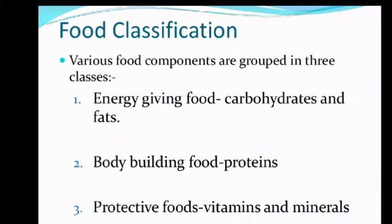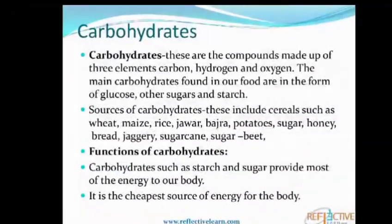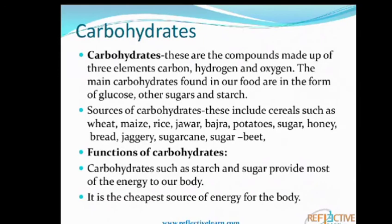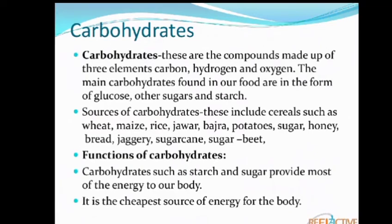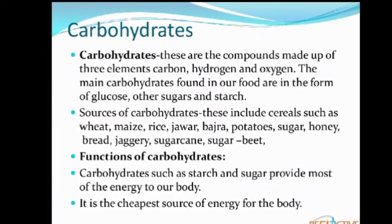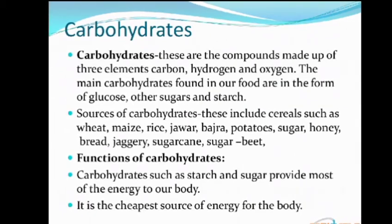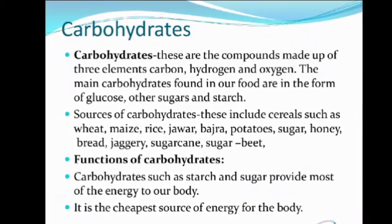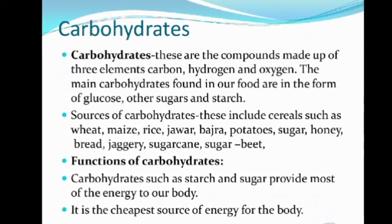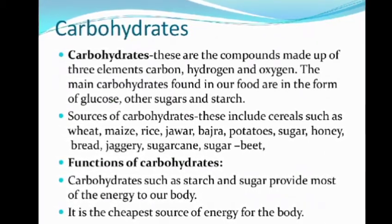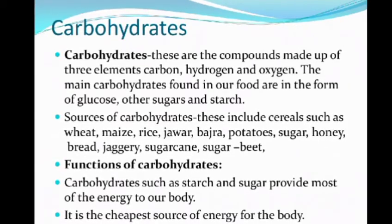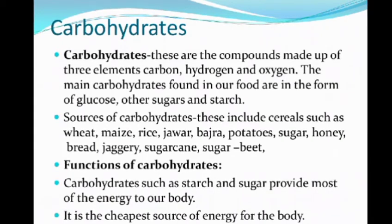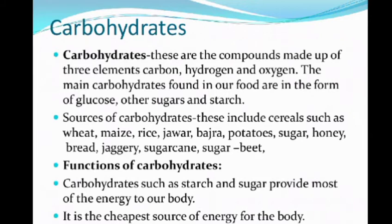Our first nutrient is carbohydrates. Carbohydrates are compounds made up of three elements: carbon, hydrogen, and oxygen. They are the main energy-giving nutrients of food, providing energy utilized to perform various day-to-day activities. The main carbohydrates found in our food are in the form of sugars — such as glucose — and starch.